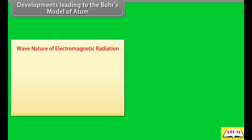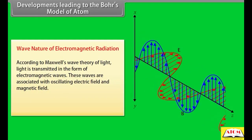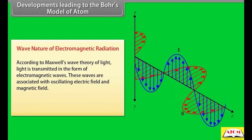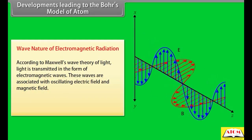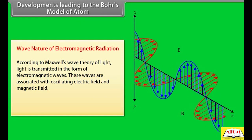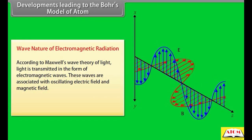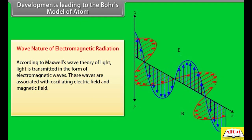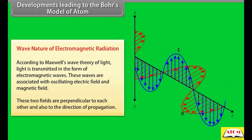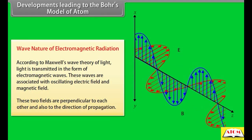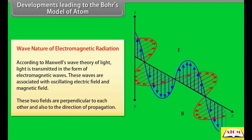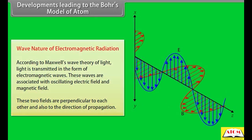Developments leading to Bohr's model of atom: Wave nature of electromagnetic radiation. According to Maxwell's wave theory of light, light is transmitted in the form of electromagnetic waves. These waves are associated with oscillating electric and magnetic fields, which are perpendicular to each other and also to the direction of propagation.